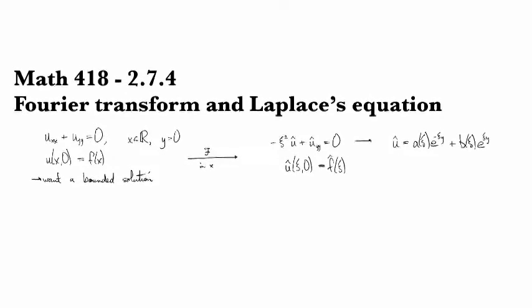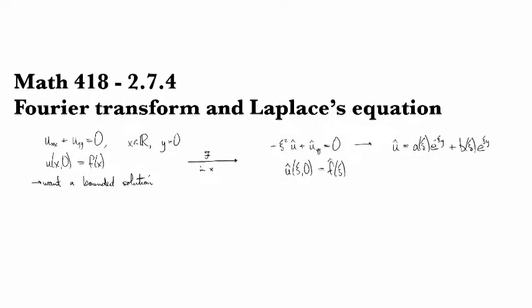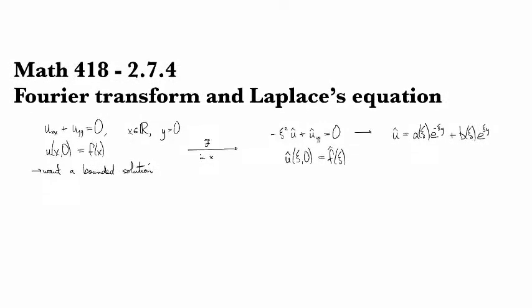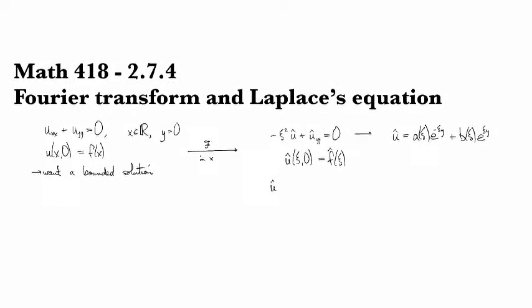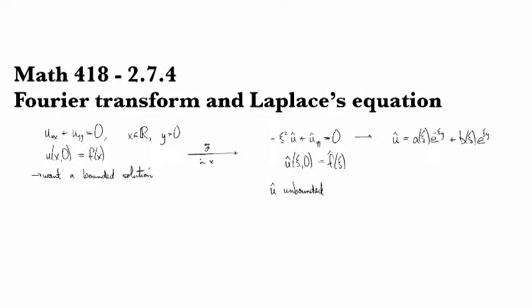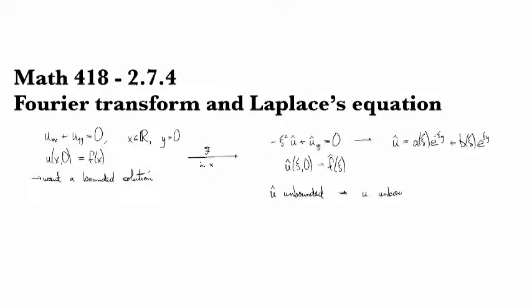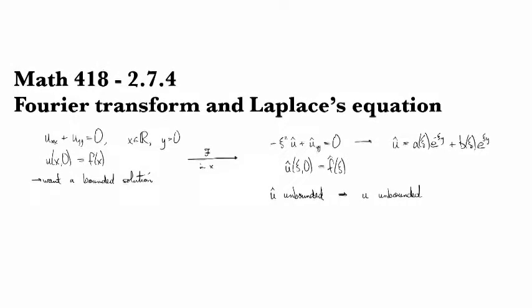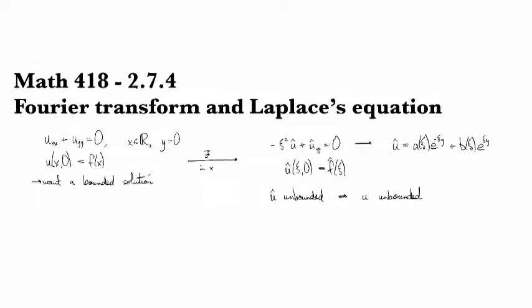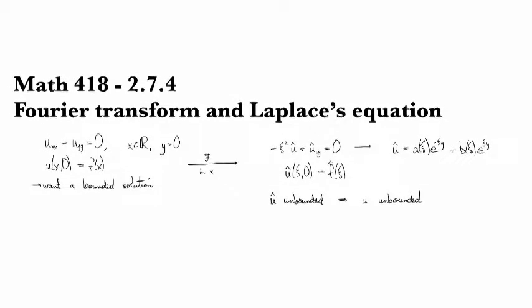And so now if we use this condition that we want u to be bounded, well it turns out that u-hat unbounded implies that u is unbounded. So if we want u to be bounded, we better make sure that u-hat is bounded.